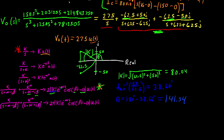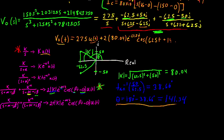Now we know the magnitude of k, alpha, beta, and theta — all we have to do is plug it in. To complete our V_o(t) equation: 275·u(t) + 2 × 80.04 × e^(−625t) × cos(625t + 141.34°) × u(t). This is the final answer to the problem for V_o(t) for time greater than 0.